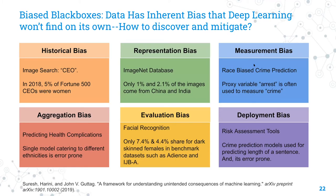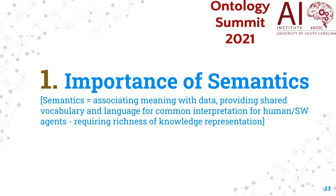There are also many biases in these black-box approaches. For example, historical bias: so few percent of CEOs have been women that a model may learn that a CEO must be a man. Or in ImageNet, only about one percent of images come from China, again producing bias. Knowledge graphs can be a very important way to identify these biases and to complement the limitations thereof.